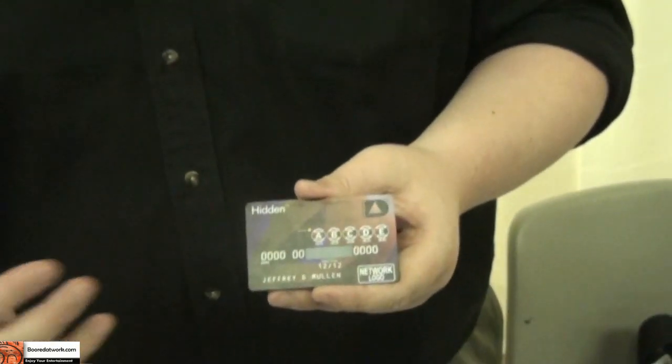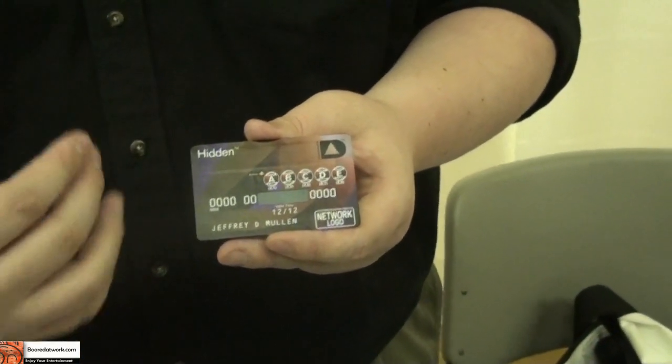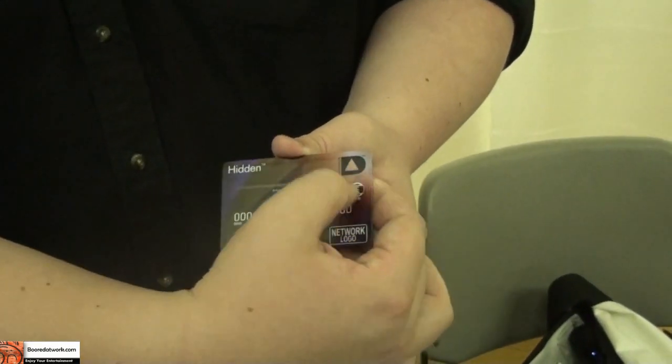There's not one card for everyone. There's different cards for different types of consumers. So this is a card for the security-oriented consumer. It eradicates credit card fraud. In order to turn this card on in order to use it, you have to enter an unlocking code that only you know into the face of the card.